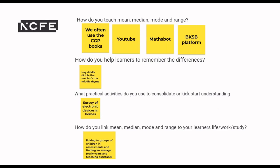Attendees use the CGP books, YouTube, Math Spot, and BKSB to teach it. For helping learners remember differences, there's the 'hey diddle diddle, the median's the middle' rhyme, which is quite good. Practical activities include doing a survey of electronic devices kept at home, and linking it to learners' life, work, or study — for example linking to groups of children in assessments and finding an average for early years and teaching assistants.